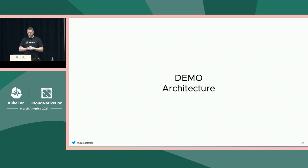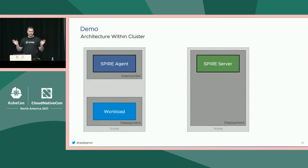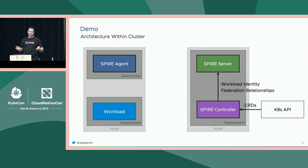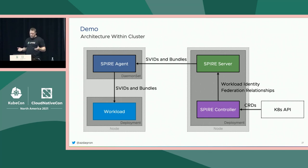Let's get into our demo architecture. We'll start with our typical SPIRE deployment inside Kubernetes, then toss in this new controller. The controller watches the Kubernetes API, gets reconciliation events for these resources, and reconciles the state with the SPIRE server, programming the workload identity and federation relationships needed. SPIRE server applies policy and ships SVIDs and bundles down to the SPIRE agent and onto the workload. That's our whole picture within a single cluster.